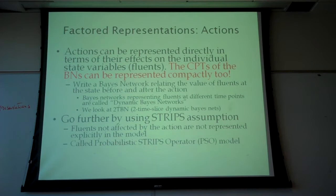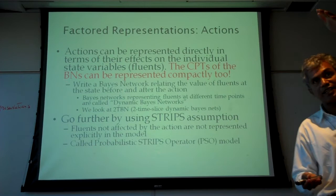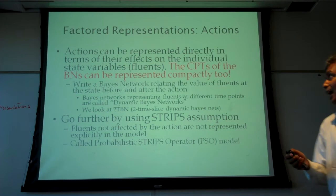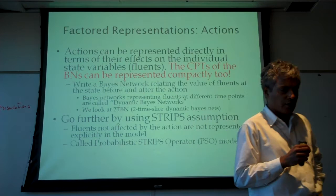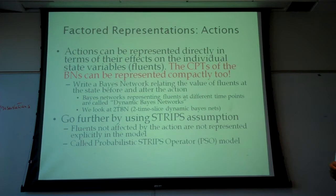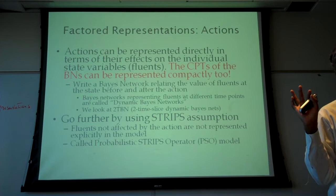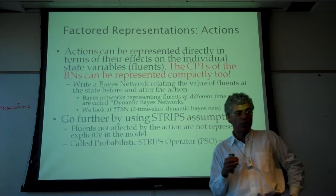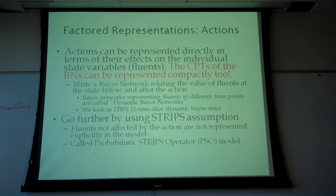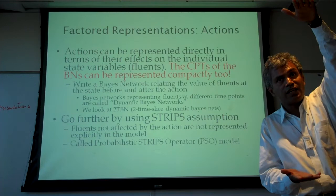To support representation of actions with uncertain effects, you need factored representations — actions whose preconditions and effects are specified in terms of state variables. The most useful thing to think about is Bayesian network representation. Specifically, two-time-slice Bayesian networks describe the action in terms of what the state variables would be before and after the action.